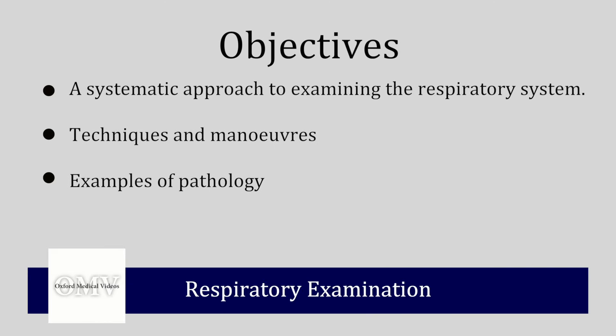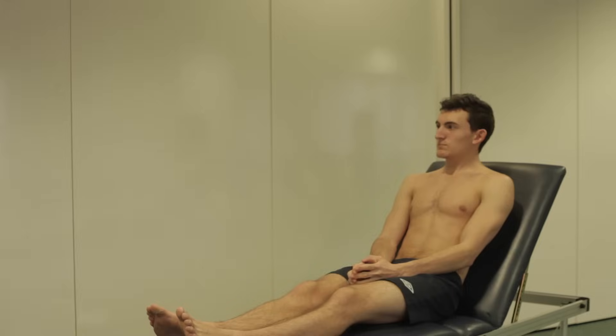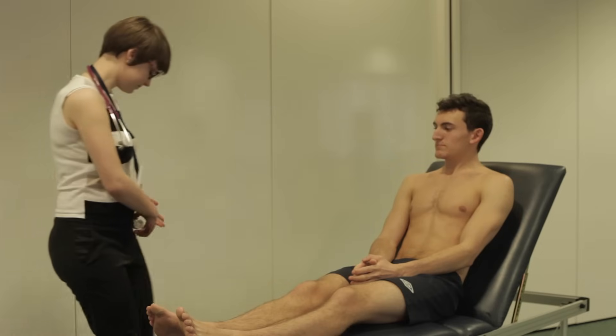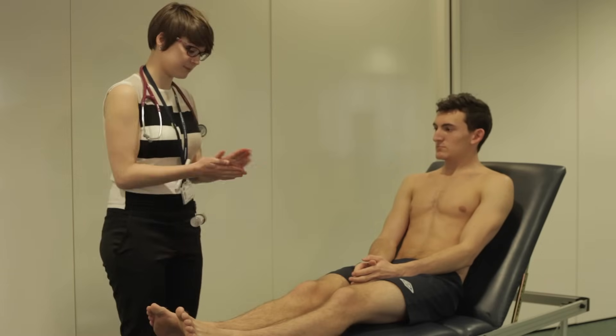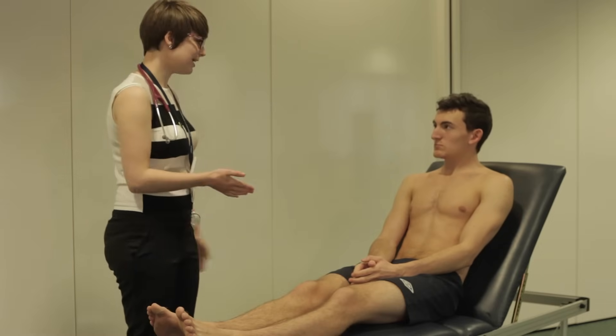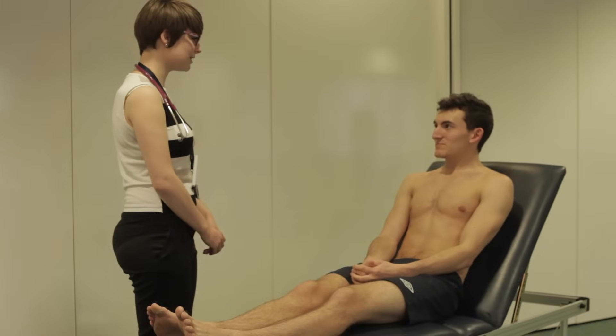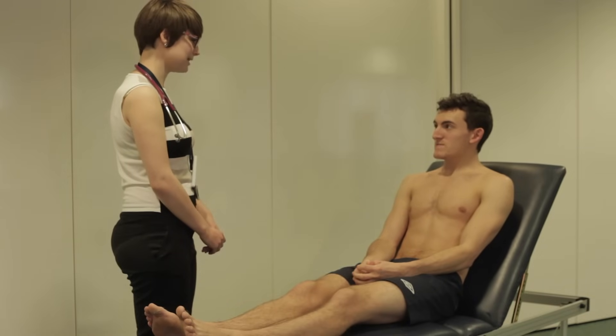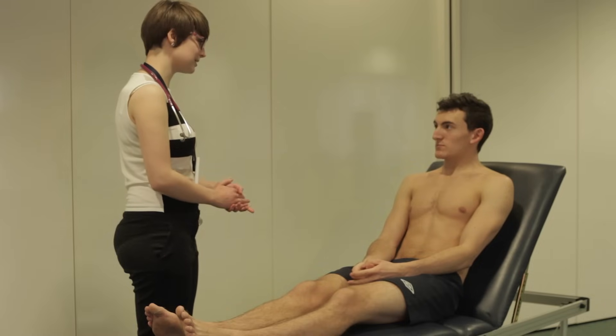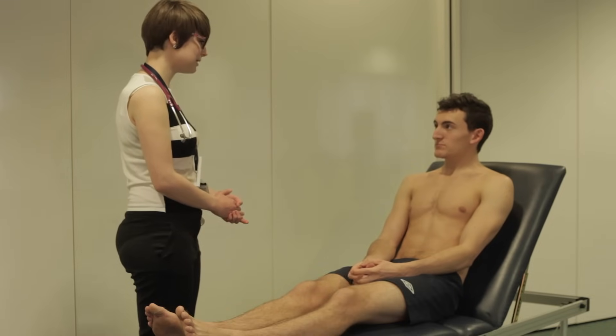This video will demonstrate a systematic approach to examining the respiratory system. It will also give examples of pathology that may be encountered in an abnormal respiratory system. As with any examination, wash your hands, introduce yourself, get permission of the patient, inquire about pain and ensure privacy, adequate exposure and correct position. For a respiratory examination, the patient should be sitting at 45 degrees and exposed to the waist.